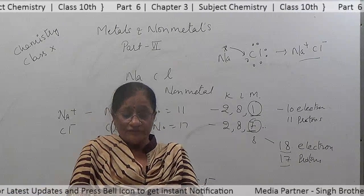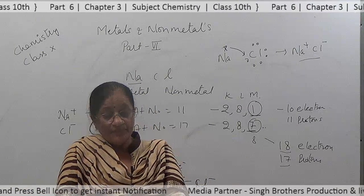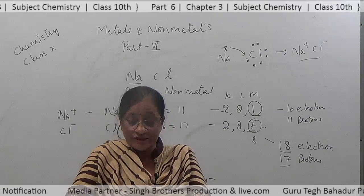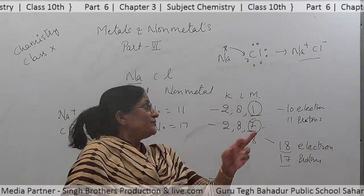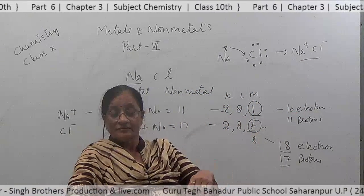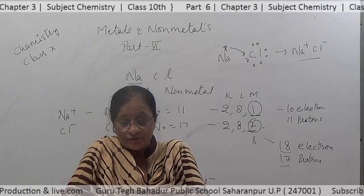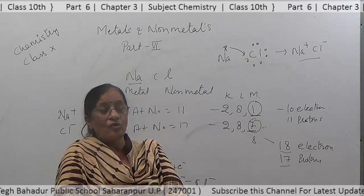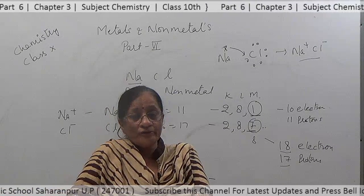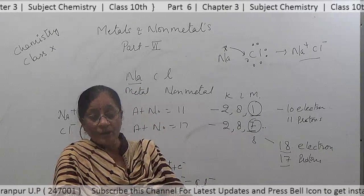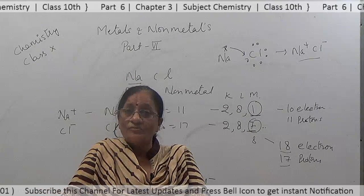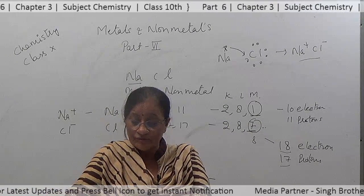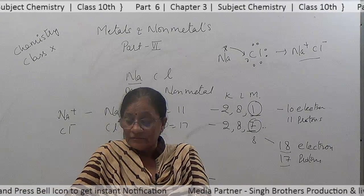Na⁺ and Cl⁻ ions, being oppositely charged, attract each other and are held by a strong electrostatic force of attraction to exist as sodium chloride. The compound formed by the transfer of electrons from a metal to a non-metal is known as an ionic compound, also called an electrovalent compound. The bond between them is called an ionic bond.